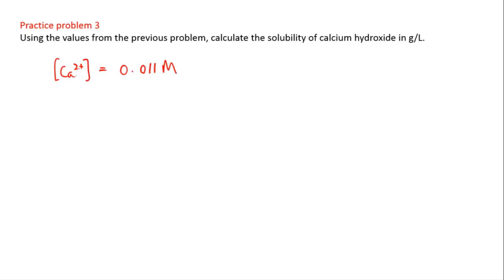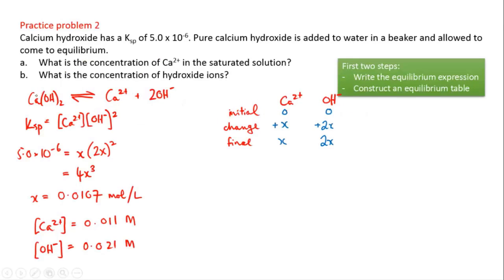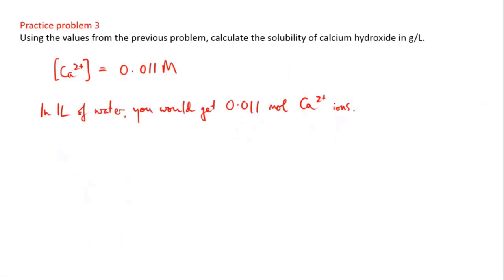That means if you were to put some calcium hydroxide into one liter of water, you would get 0.011 mole of calcium ions. And if you recall from the equation, the stoichiometric ratio between the calcium hydroxide solid and the calcium ions is 1 to 1. So if we got 0.011 moles of calcium ions, it means that we must have dissolved the same amount.